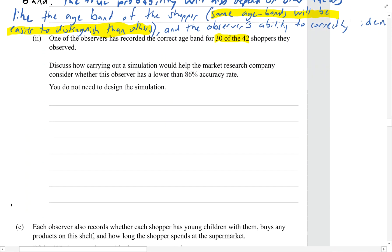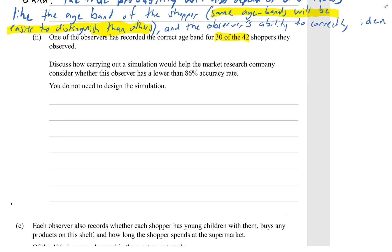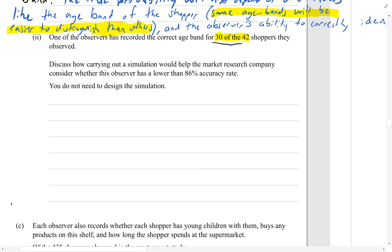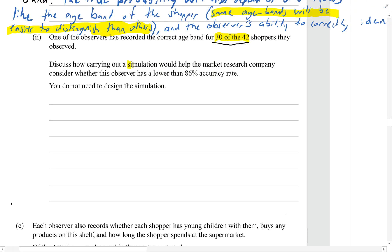So we pick it up at part 2. One of the observers has recorded the correct age band for 30 out of 42 of the shoppers. The question asks us to discuss how carrying out a simulation would help the market research company consider whether this observer has a lower than 86% accuracy rate.